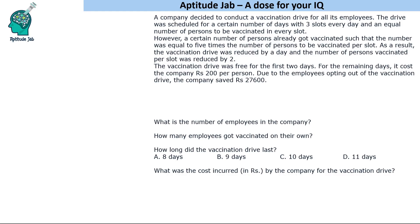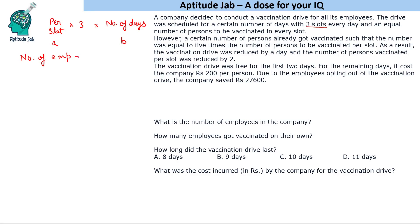Let us define variables. There are three slots every day and a certain number of days. Let the number of people vaccinated per slot be 'a'. There are three slots in a day, so the number of people vaccinated in a day is 3a. Let the number of days be 'b'. So the total number of employees is 3ab.